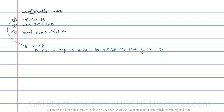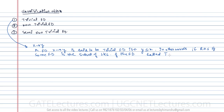In other words, if the right-hand side of some functional dependency is the subset of the left-hand side of the functional dependency, then it is called a trivial functional dependency.